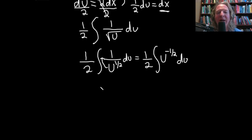Now we can apply the power rule. So this is 1 half. Remember, you take this number and add 1. So 1 plus negative 1 half is 1 half. And then you also divide by the result. That's called the power rule.